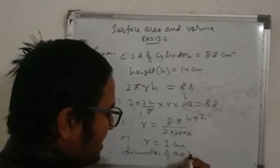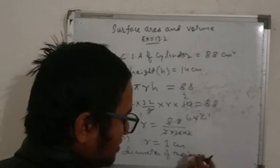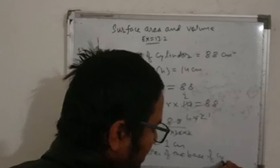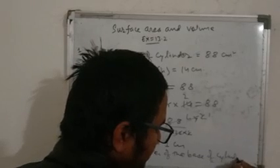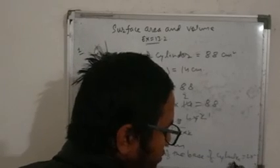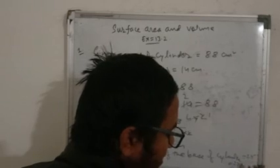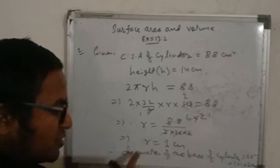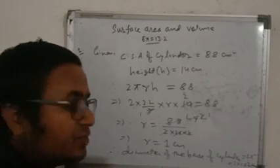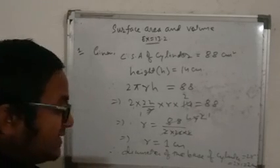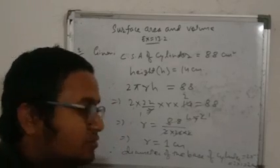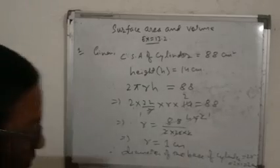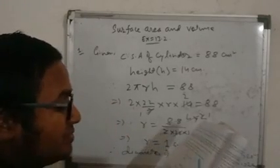The diameter of the base of the cylinder equals 2r, so 2 × 1 = 2 centimeter. The radius is 1, so the diameter is double — that is 2 centimeters. Now next, question number 2 is homework.